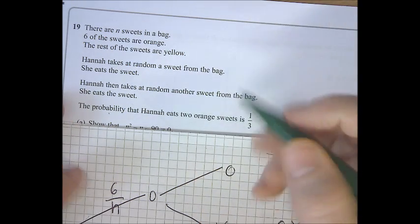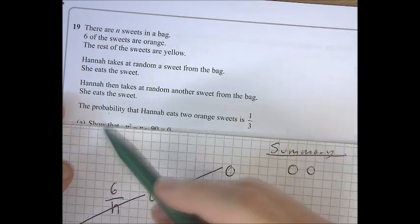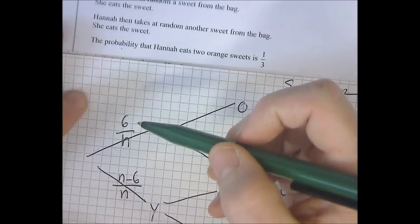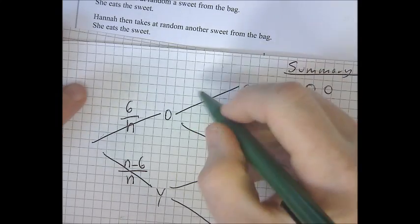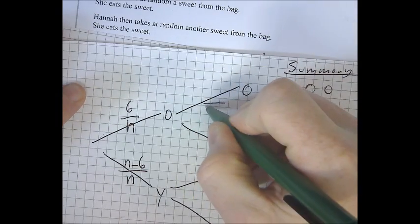Now, she doesn't put the sweet back in, so in the easier problem, if that had been a 10, that would now be a 9. 9, but don't write a 9, write an N minus 1.